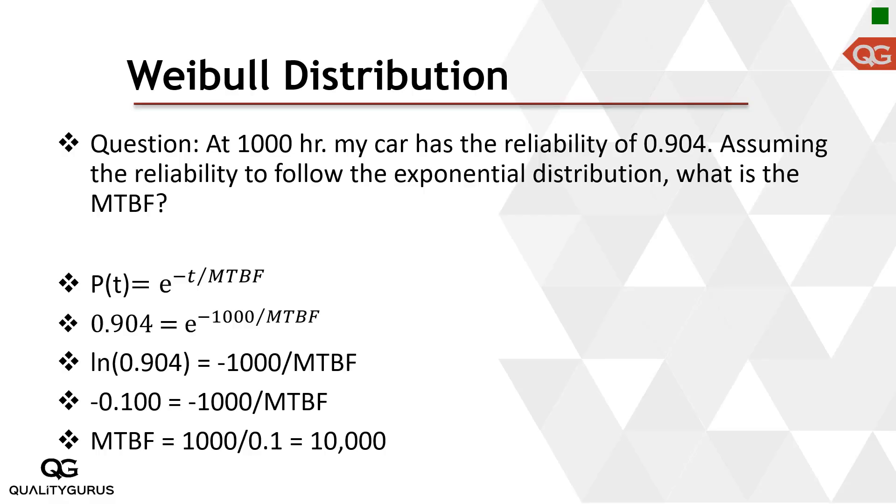Here I have the reliability value and I want to find out mean time between failure. This is just the reverse of what we did in the previous example. So here I know that at 1000 hours, the reliability of my car is 90%, 0.904.